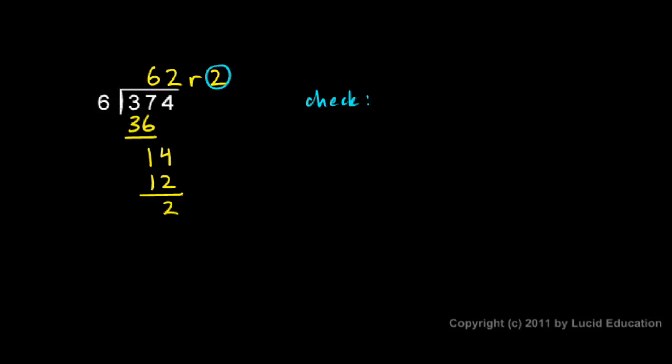We can check it. We should be able to multiply 62 times 6 and then add back in our remainder of 2. So 62 times 6: 6 times 2 is 12, 6 times 6 is 36, plus the 1 is 37. So I get 372. And you can see when I add the remainder back in there, plus 2, I get 374. That's my original number, and the check verifies that my answer is correct. 62 remainder 2 is the answer.